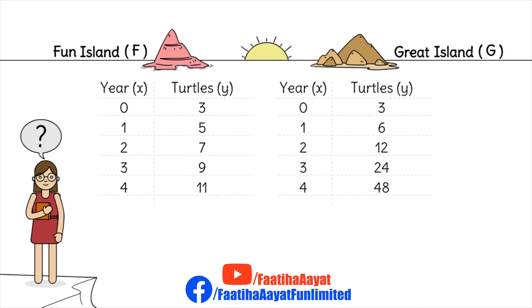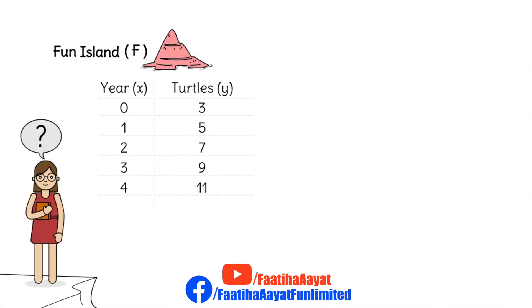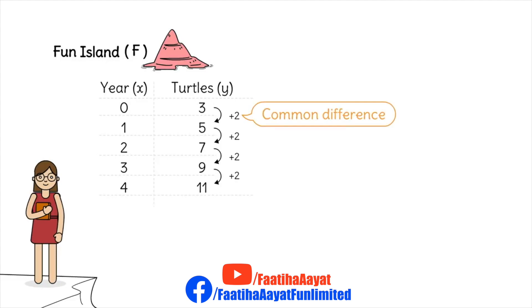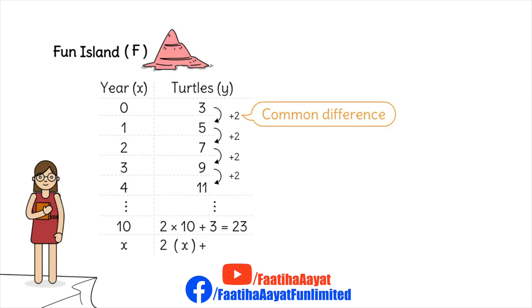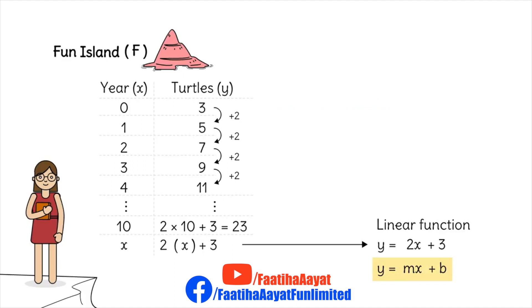So can I find a difference here? Yes, I can. Let's look at Island F. Here we start with three turtles and we keep on adding two. Sometimes we call this our common difference, where we have to start with a number and keep adding the common difference. So if 10 years pass, then what we'll do is two times the number of years plus the turtles we started with, which is 23. And for x years, that's two times x plus three. Wow, this is a linear function.